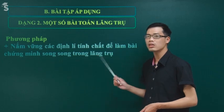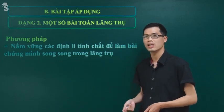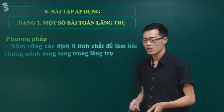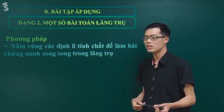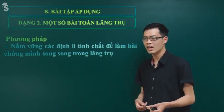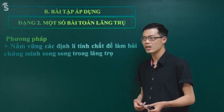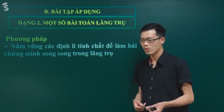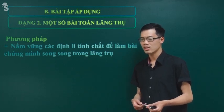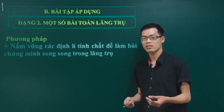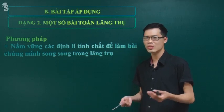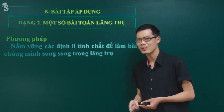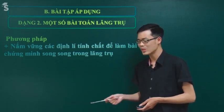Hoàn toàn tương tự như trong hình đã học, chúng ta sử dụng những dấu hiệu: Ta-lét, đường trung bình, tỷ lệ. Một số tính chất liên quan đến song song thì chúng ta đều đã biết hết rồi.